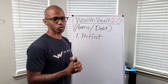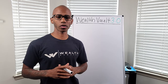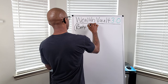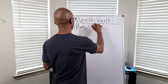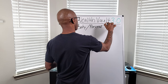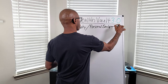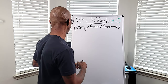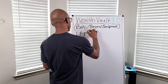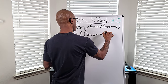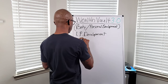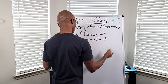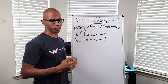WealthBowl 3.0 is considered the core, or you could call it the body. This is where we take care of all of our personal development. With the WealthBowl 3.0 system, it consists of two accounts: the first one is personal development, and the second account is the luxury fund. And that's pretty much WealthBowl 3.0.